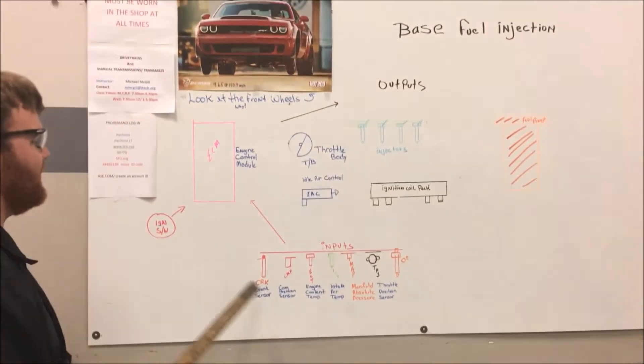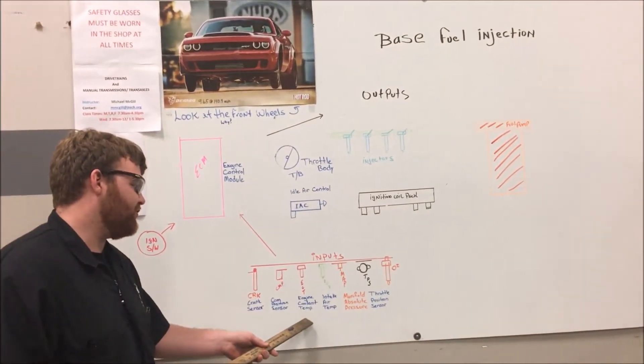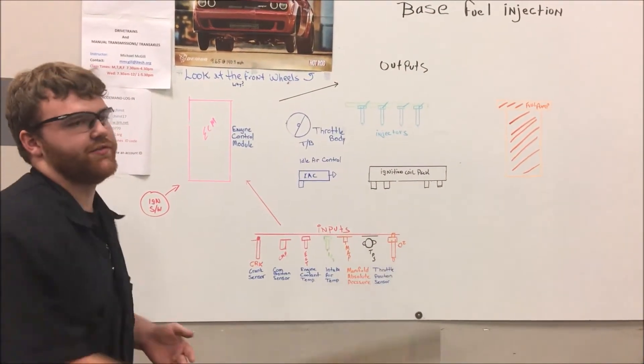So for our inputs, we got the crank sensor, pan position sensor, engine coolant temp, intake air temp, manifold absolute pressure, throttle position, O2 sensor.